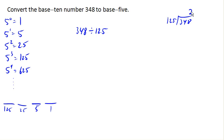So 2 times 125 would be 250. We subtract, and we're left with 98. So when we divide here, we would get 2 with a remainder of 98.